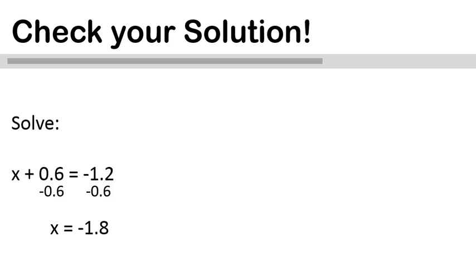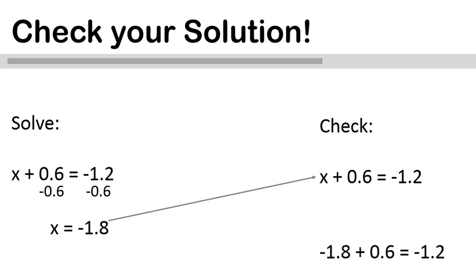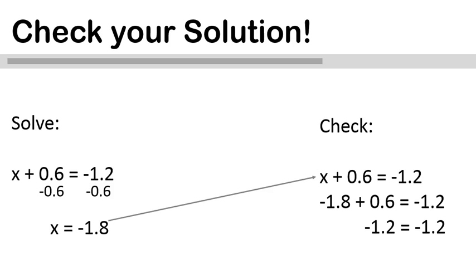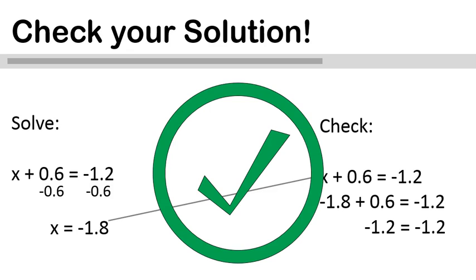My work is not yet done. First I need to check, is that correct. So to check my work, I'm going to take my answer of x equals negative 1.8, I'm going to substitute it back into the original equation for x. Does negative 1.8 plus 0.6 equal negative 1.2? Yes it does. So now I know that my solution is negative 1.8. That's the correct solution. We get a big old green check mark for that one. Nicely done.